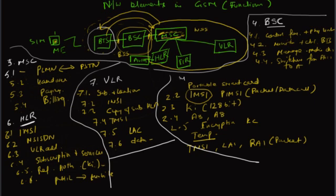This is the Authentication Center, guys. It stores the signed response which is used for authenticating the mobile equipment. It stores the KI which is the Subscriber Authentication Key. It also generates the KC, the Cipher Key.